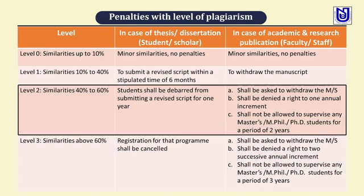In Level 2, if the similarity is 40% to 60%, then in case of thesis or dissertation, the student shall be debarred from submitting the revised script for one year. But if the similarity of 40% to 60% is found in academic or research publication, there are three types of penalty: the author should be asked to withdraw the manuscript, the author shall be denied the right to one annual increment, and shall not be allowed to supervise any Masters, MPhil or PhD students for a period of two years.